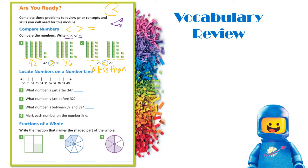Next part: locate numbers on a number line. What number is just after 34? Here's my 34 on my number line — one jump to the right is 35. What number is just before 32? One jump to the left is 31. What number is between 37 and 39? The number in the middle is 38. We marked each number on the number line.